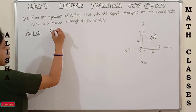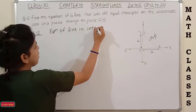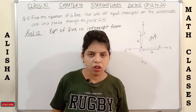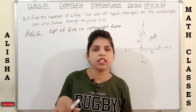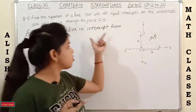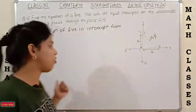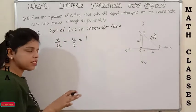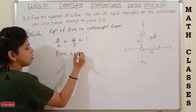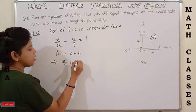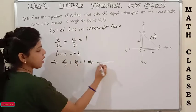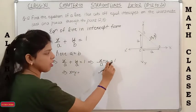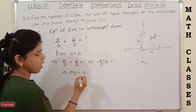The intercept form of a line is x/a + y/b = 1. Since the intercepts are equal, a = b, so the equation becomes x/a + y/a = 1. Taking LCM, this gives x + y = a. This is equation 1.